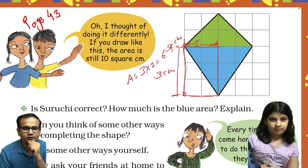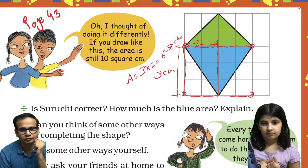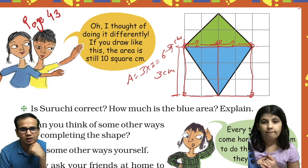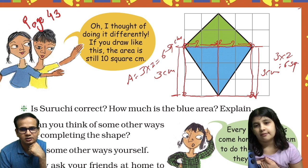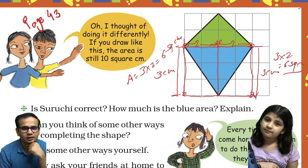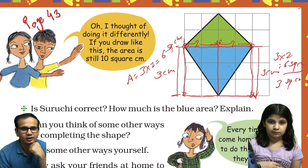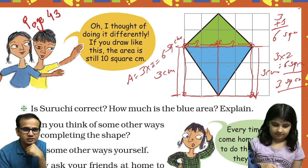Six square centimeters. Similarly, for this rectangle also — how much is it? Here it is 2 cm and this is 3 cm, so 3 into 2 is 6. So this rectangle is 3 square cm. So 3 plus 3 is 6, so 6 square centimeters is the area of this blue area.